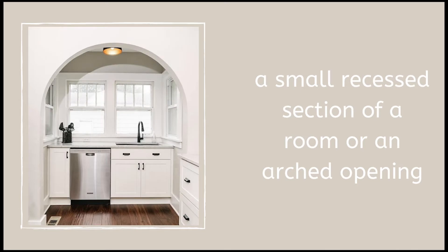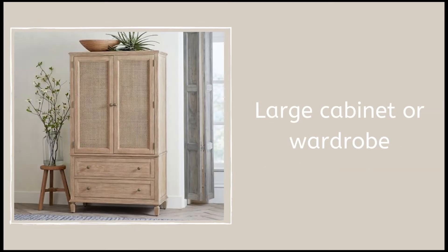An alcove is a small recessed section of a room or an arched opening. If you take a look at the photo, this is a very small recessed section which is the kitchen, and it also has an arched opening. An armoire is a large cabinet or wardrobe that people usually use for storage or to put their clothes in.